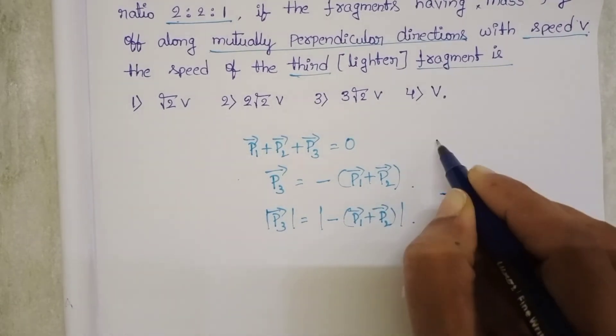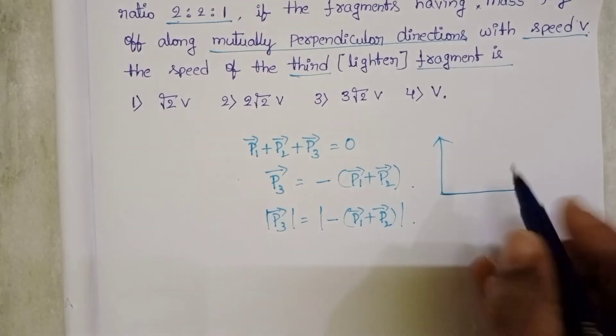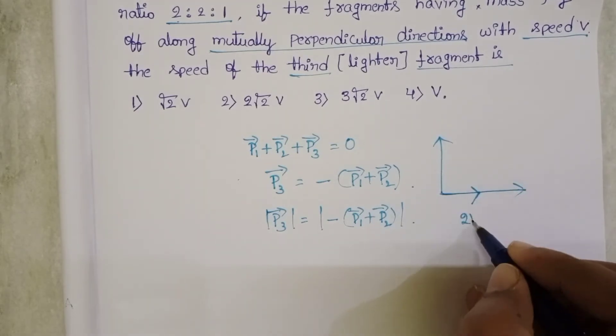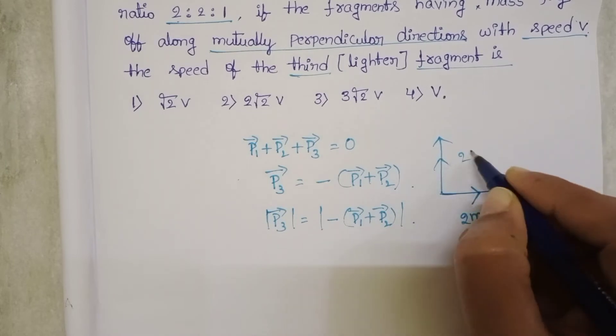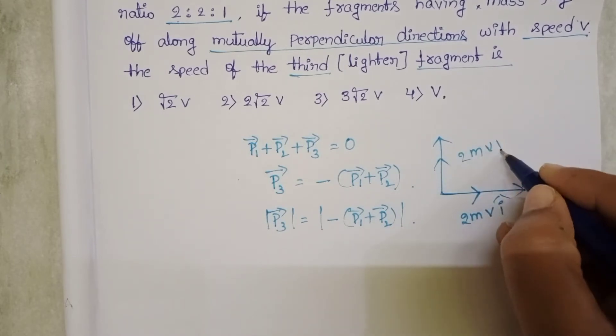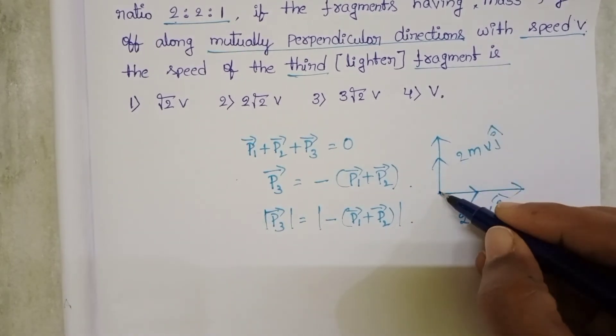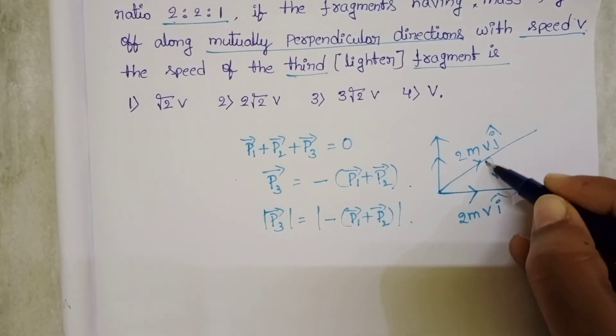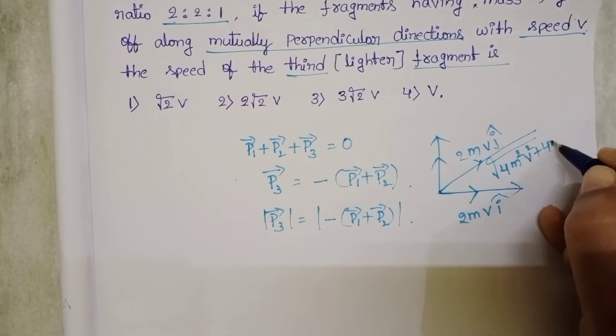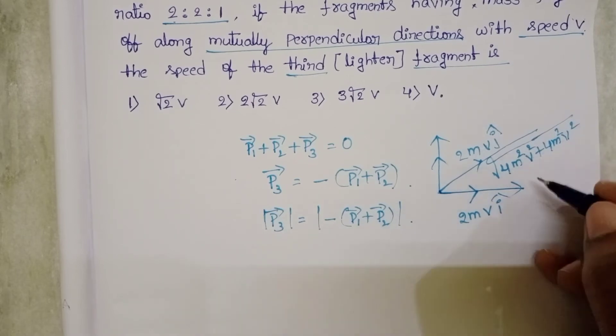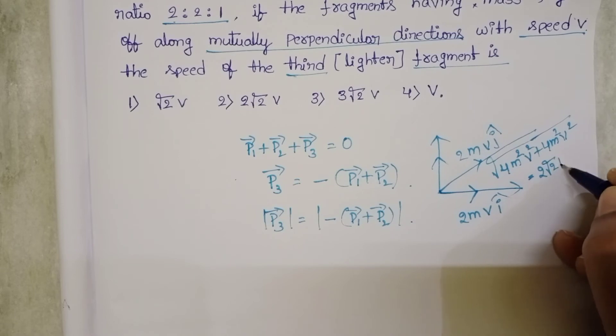When two fragments moving in perpendicular direction, first fragment 2MV I cap and the second fragment 2MV J cap. Resultant becomes square root of 4M square V square plus 4M square V square. The angle between the two fragments is 90 degrees. Then it becomes 2 root 2MV.